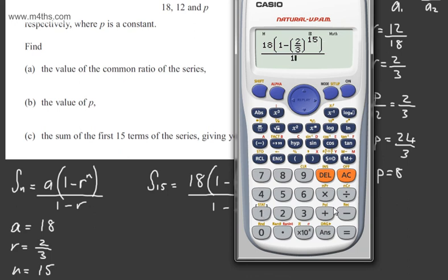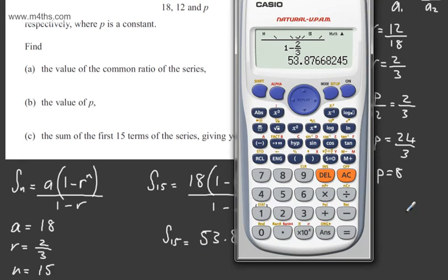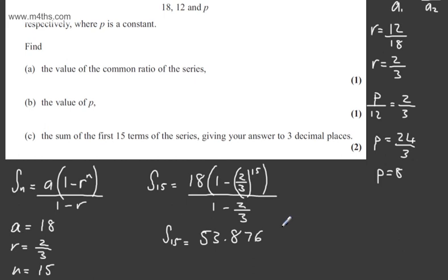So simply plugging this into a calculator, we can go ahead and work this out. 1 minus 2 thirds, or of course you can just put in 1 third. This gives me now 53.876, so let's write this out. We can say the sum of the first 15 terms is 53.87668245. Therefore, we can state now that to 3 decimal places, it will be 53.877, and that's now to 3dp. So, 2 marks for Part C.